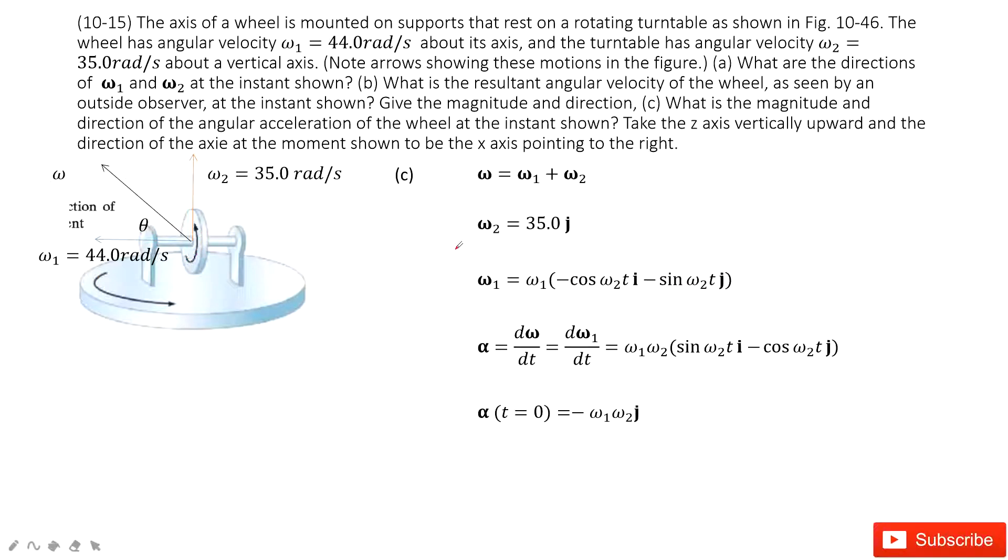Next, we need to find the angular acceleration. For angular acceleration, we must consider that the angular velocity is a vector. It equals two components: omega 1 and omega 2. For omega 1 plus omega 2, we can see omega 2 is independent of omega 1. It is just rotated in this way, pointing up. So this is a constant.